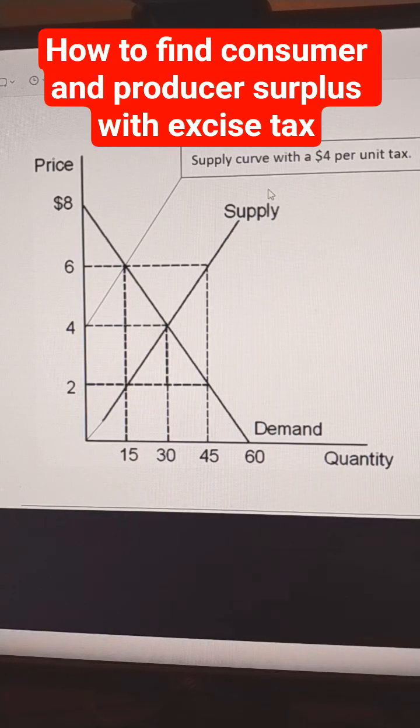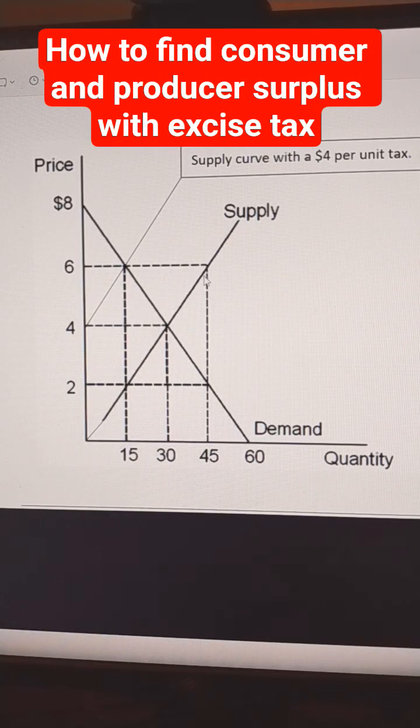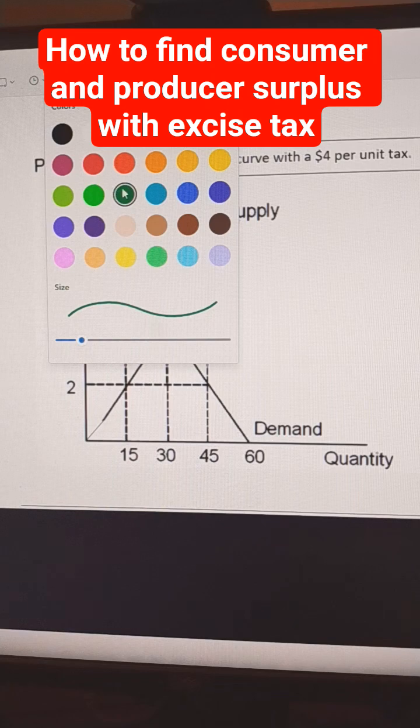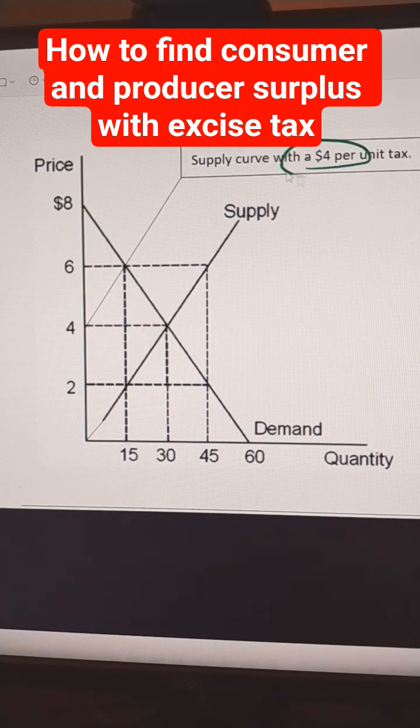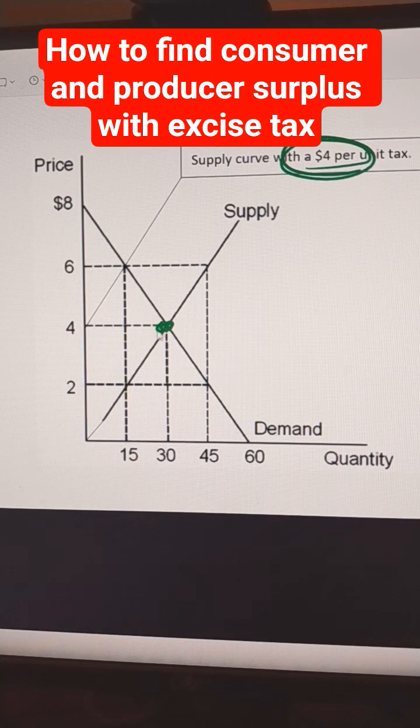Here's how to find the consumer and producer surplus with a tax. We're told that the tax is $4 per unit. Supply and demand meet here at $4, so this is the equilibrium that we start out with.